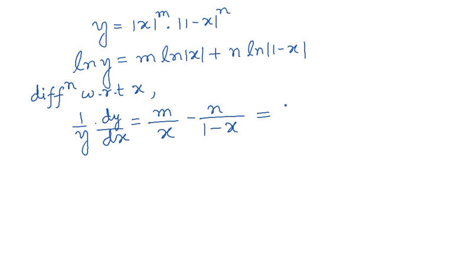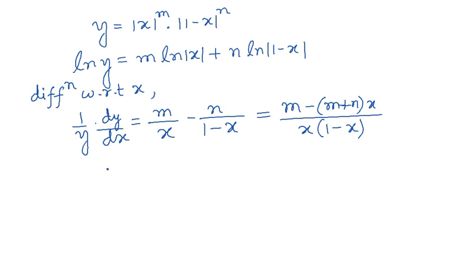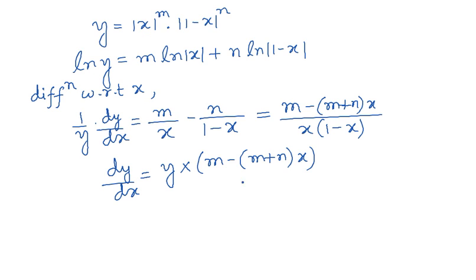Simplifying, the numerator comes out to be m minus (m+n)x. So dy/dx is the whole function y multiplied by the factor (m - (m+n)x) divided by x·(1-x). Now we proceed to analyze the sign changing of the derivative.